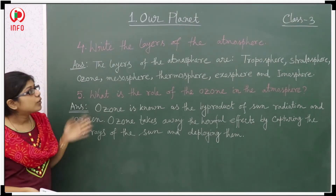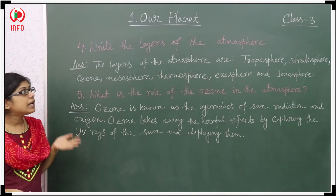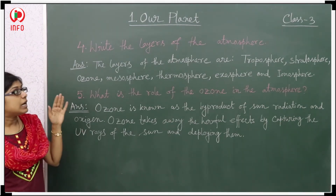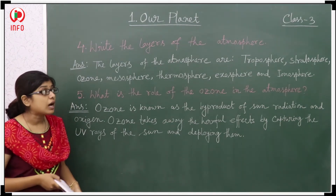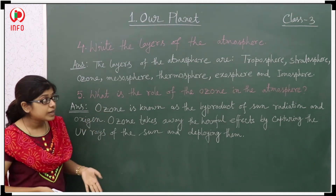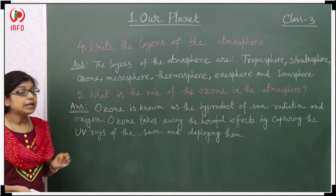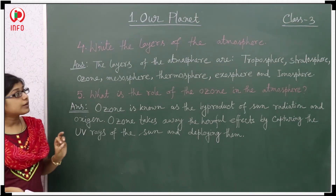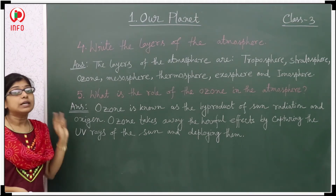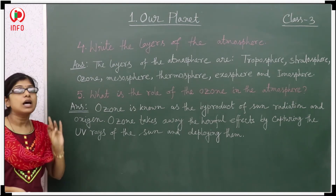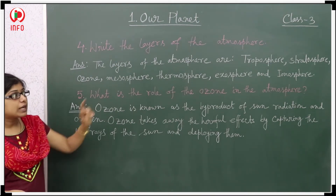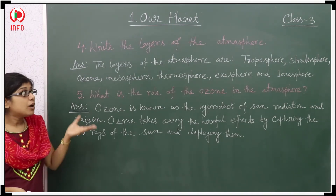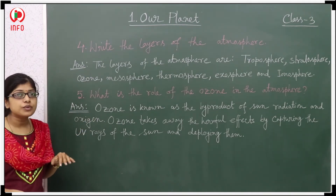Fourth question: Write the layers of the atmosphere. The layers of the atmosphere are troposphere, stratosphere, then ozone, then mesosphere, then thermosphere, then exosphere, and lastly the outer atmosphere. Note that the exosphere and outer atmosphere are both part of the thermosphere.